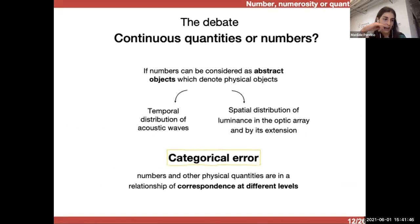But what I think about this debate, and I will be happy to discuss with you what do you think about, is that if numbers can be considered as abstract objects which denote physical objects, which can have different instantiation, like different spatial distribution of luminance that are perceived by their optical ray or different types of temporal distribution of acoustic waves, then there is not really this opposition between a number and physical quantities, because they are just in a relationship at different levels. So numbers would have a second-order character that non-numerical quantities lack. But to pose the two hypotheses, if we are speaking of numbers, if we are speaking of only physical quantities, there is not an opposition between these two, I think.